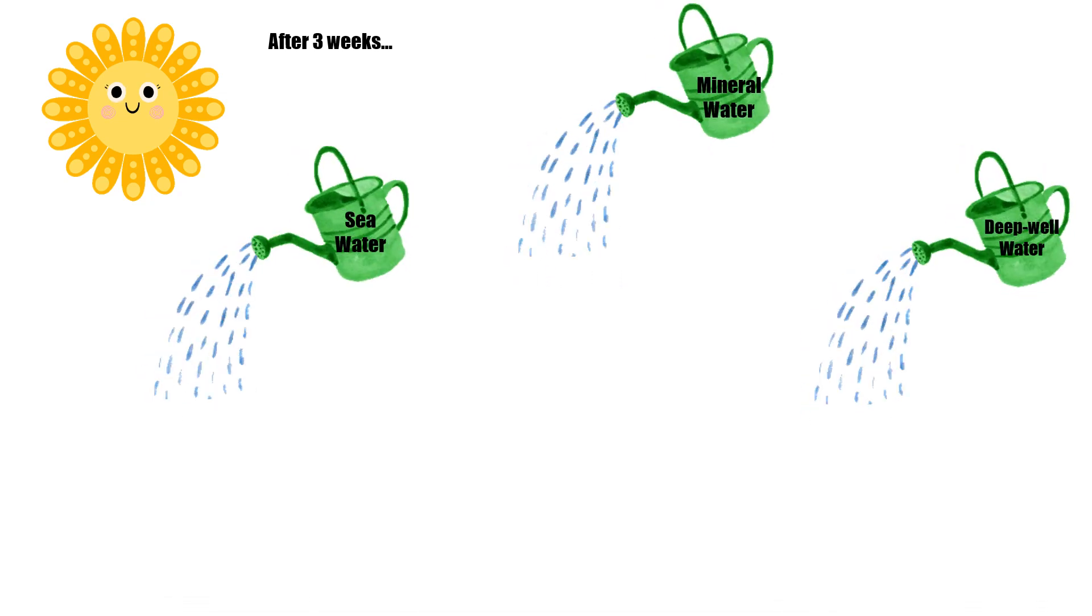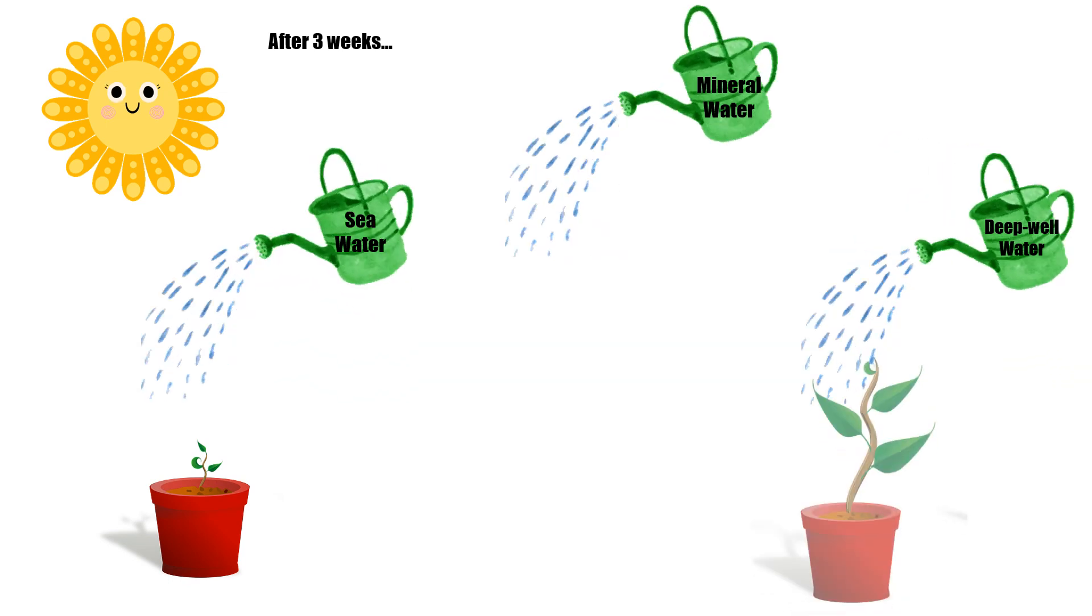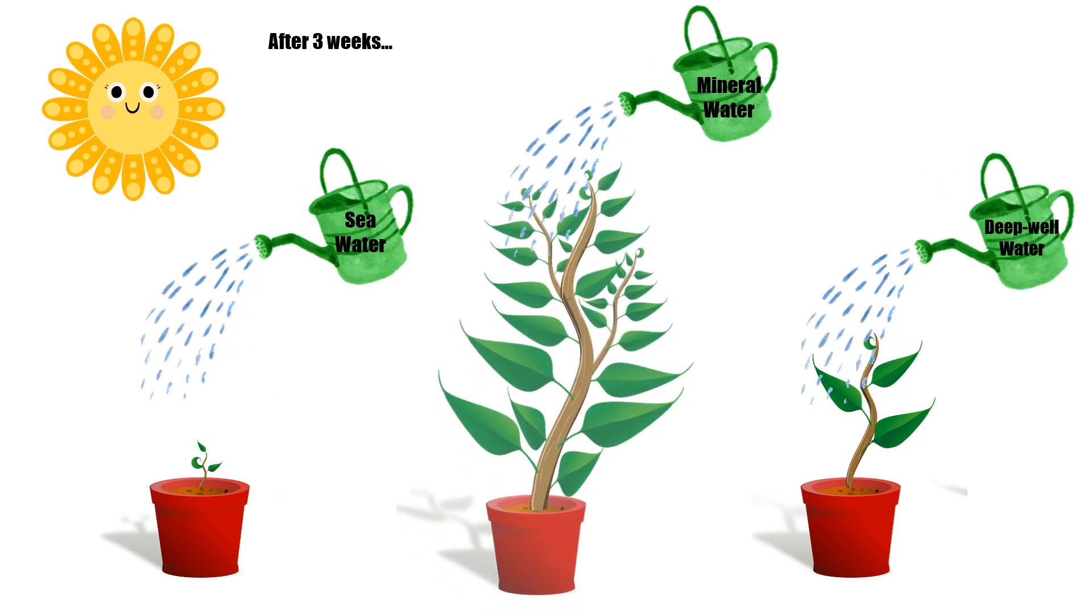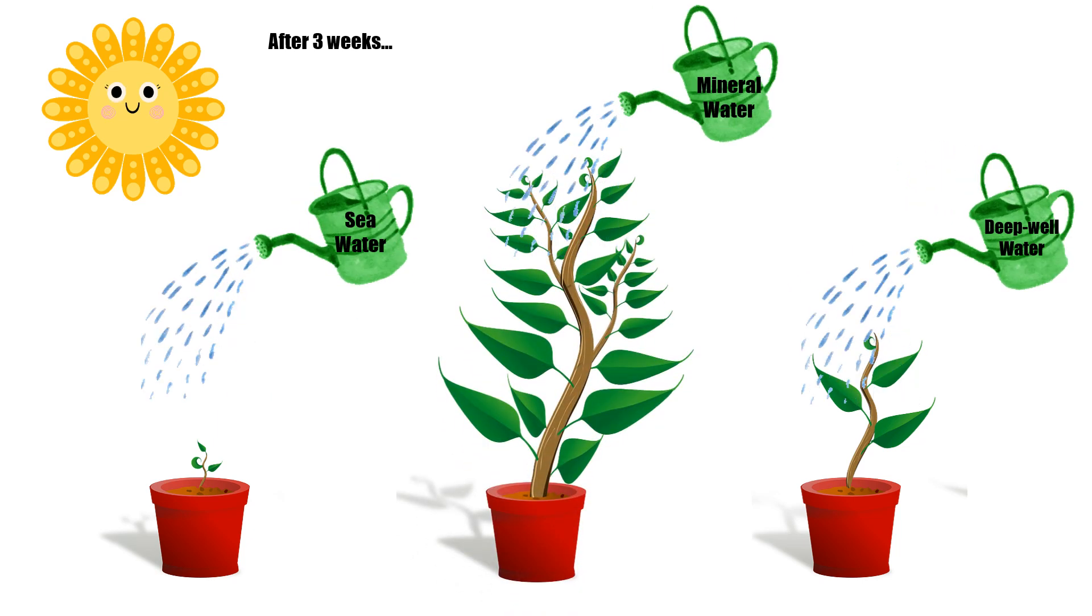After three weeks, your experiment showed a significant difference in the growth of the plant. The one that receives seawater showed no significant growth. While the one that receives deep well water grew a certain height with few leaves. But, the one that receives mineral water grew best. It is the tallest among the three with so many leaves.